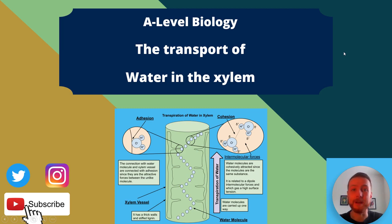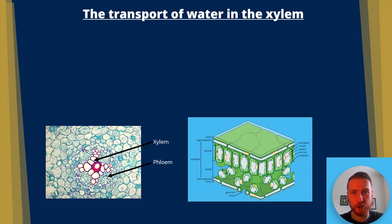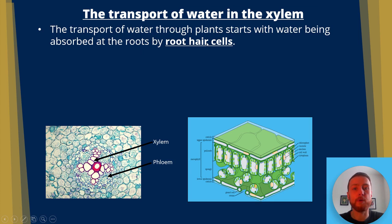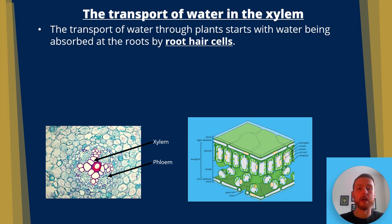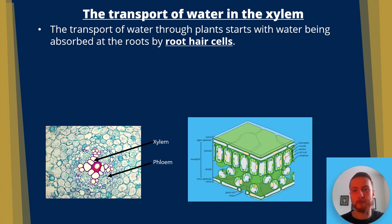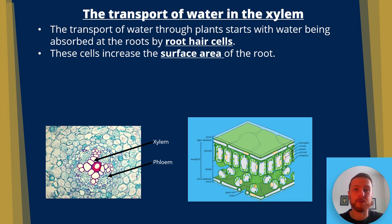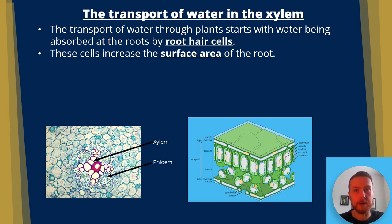The transport of water in the xylem — AQA A-level biology. The transport of water through plants starts with water being absorbed by root hair cells. They're small adaptations on plant cells that increase their surface area to volume ratio, speeding up transport. These cells increase the surface area of the root dramatically, meaning more water and minerals can be absorbed per unit of time.